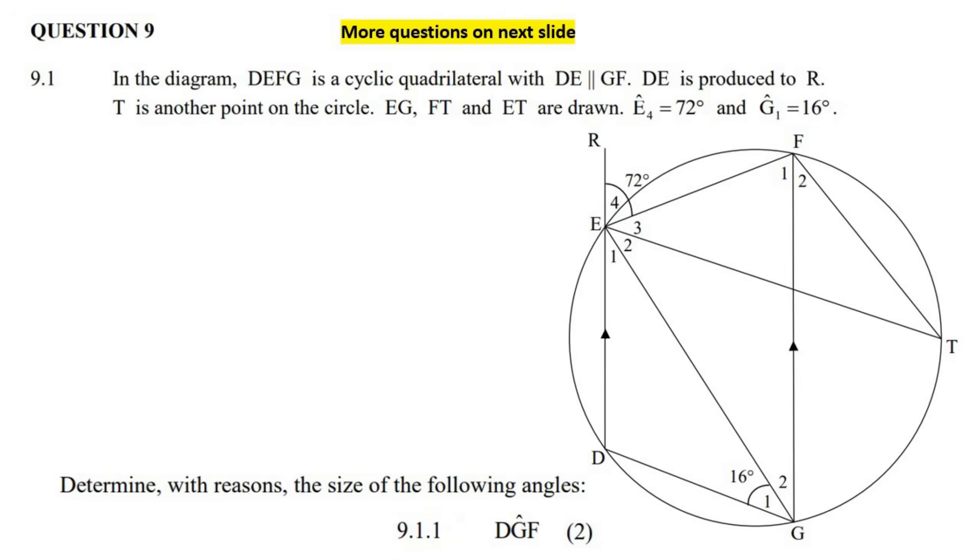So it says that in the diagram, DEFG is a cyclic quadrilateral. They tell us that DE is parallel to GF.